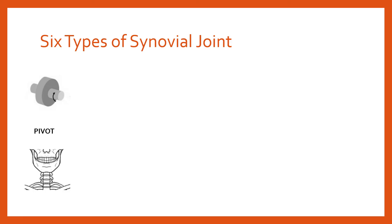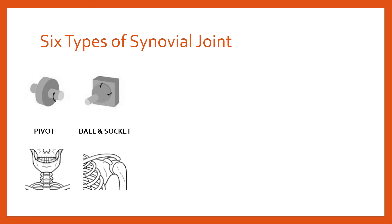The second type of synovial joint is a ball and socket joint. The best known examples are the shoulder and the hip. In the shoulder, the proximal end of the humerus is shaped like a ball and slots into a socket, held in place by ligaments, tendons, and muscles. A ball and socket joint allows many different kinds of movement: flexion, extension, adduction, abduction, rotation, circumduction, and so on.